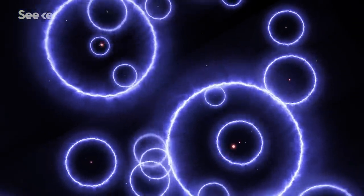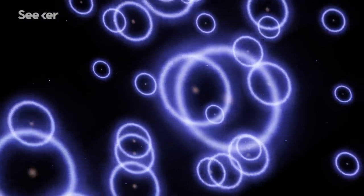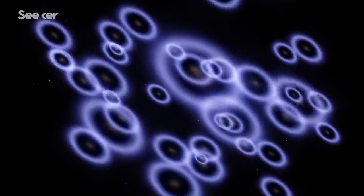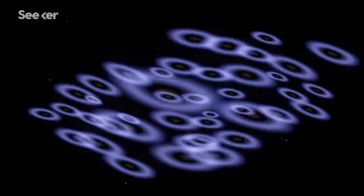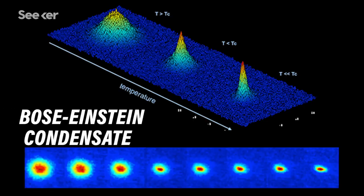As we cool the gas of atoms, we lower its momentum and each particle's wave nature starts to become more and more pronounced. And if you get cold enough, these wavelengths get so large, these atoms really start to blur together. And at that point, this strange new state of matter occurs called a Bose-Einstein condensate.